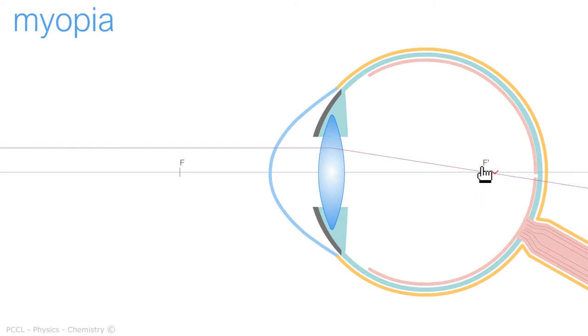When the object is very close, there is no problem. But when the object is far away, as is the case here, the image forms in front of the retina and the eye cannot accommodate to bring the image here. It is then advisable to associate with this crystalline lens, which seems too convergent, a divergent lens.